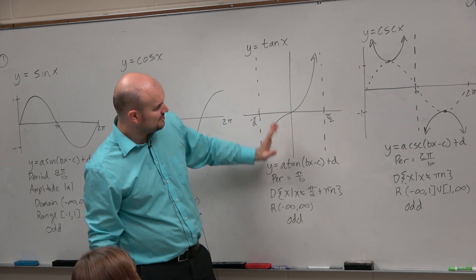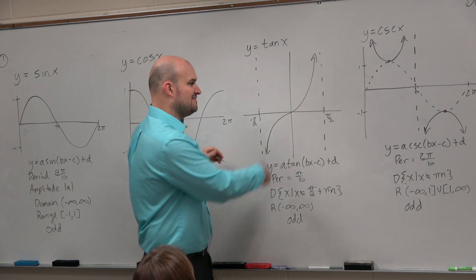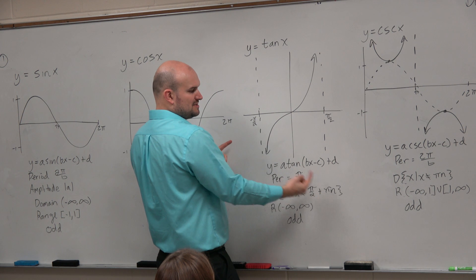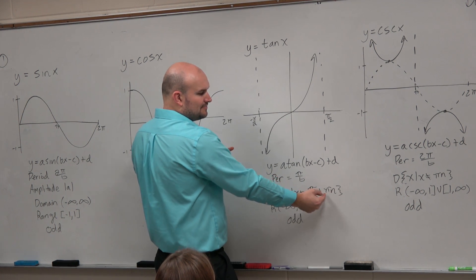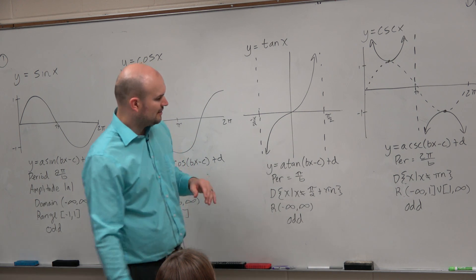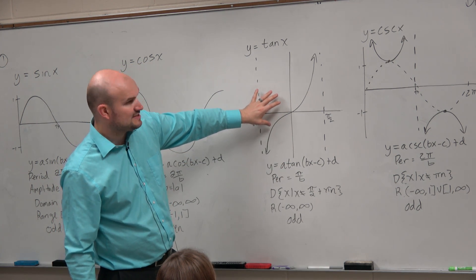The domain, then, is going to be all real numbers, except for where the asymptotes are. So what we need to do is find an asymptote, and then find the distance between each of those asymptotes, and add that distance times a variable, which we'll talk more about how to write the domain in a little bit. Obviously, the range is negative infinity to infinity, means the graph is unbounded.